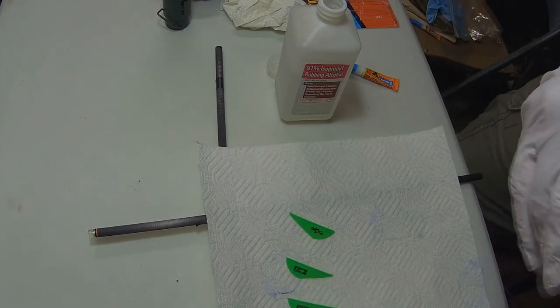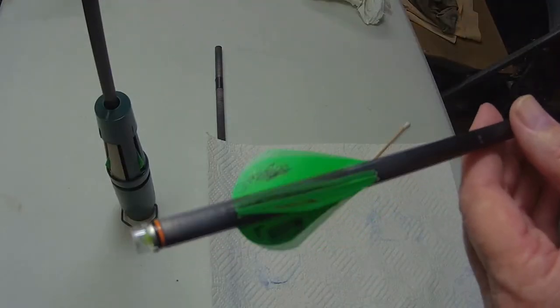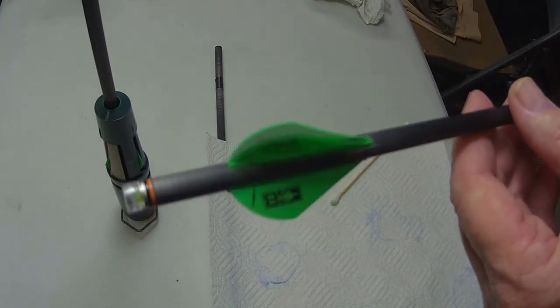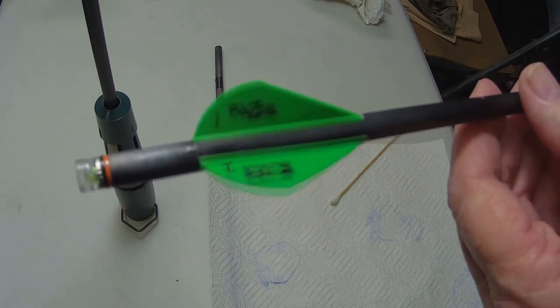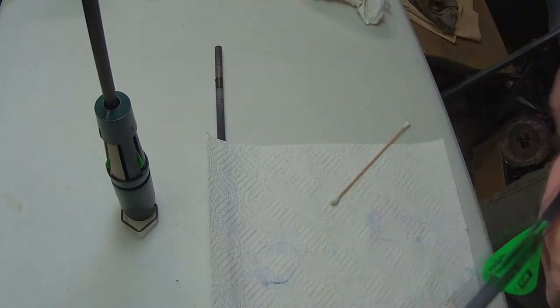Okay, here was the first arrow I did - have my vanes numbered one, two, and three. Second arrow is still in the jig drying.